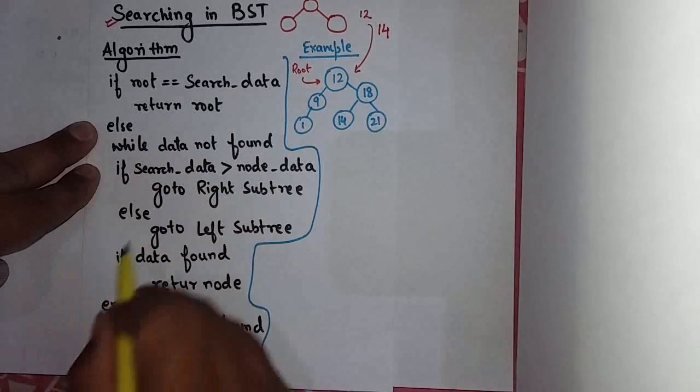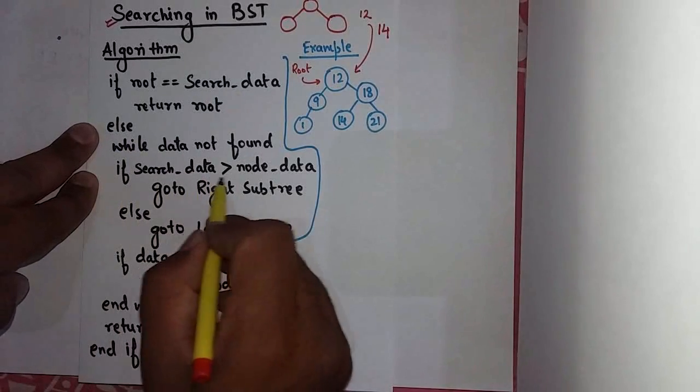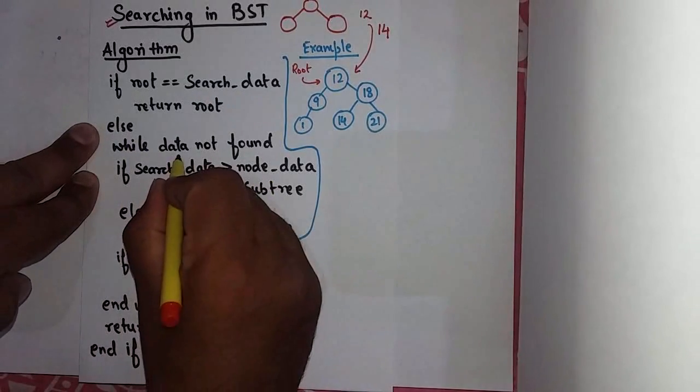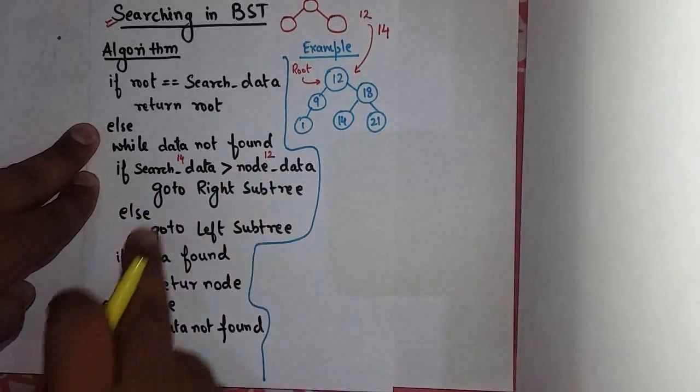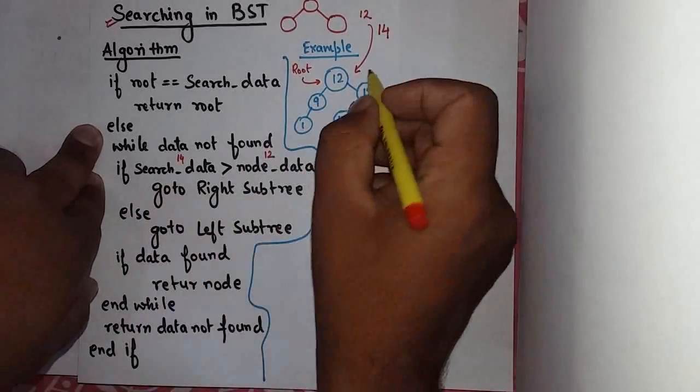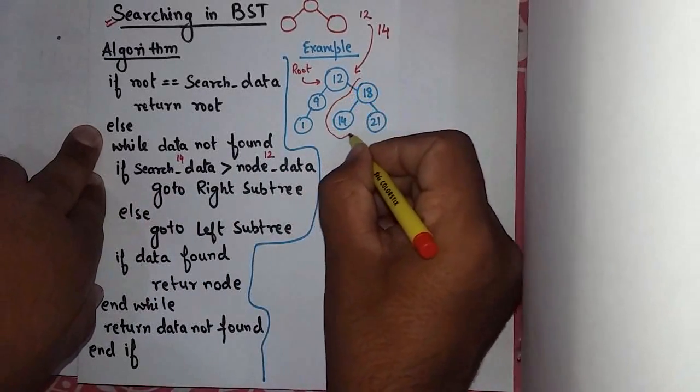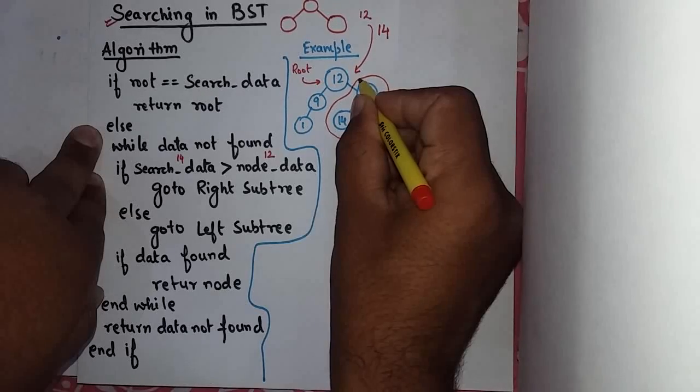If root is equal to search data, return root. What we have seen is root is equal to 14. No. Enter in this loop. If search data is greater than node data, now 14 is greater than 12 at the moment. Go to right subtree. Now I am going to consider this part.